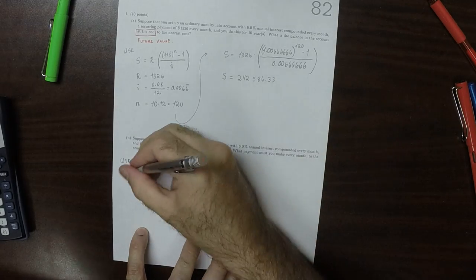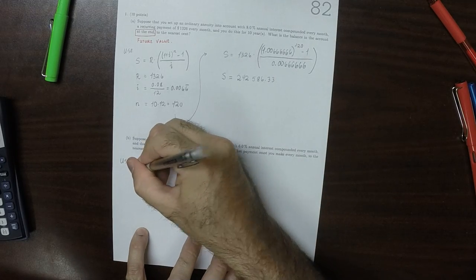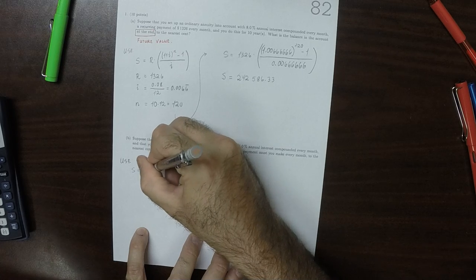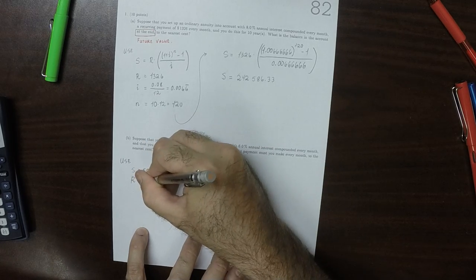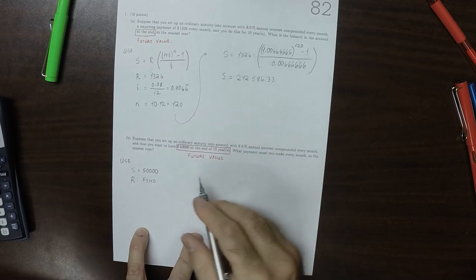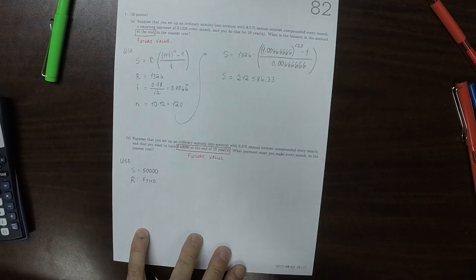Except in this case, we're going to use that S is $50,000, that's the value we want to have. R, this is what we're supposed to find, because it says what payment must you make every month.